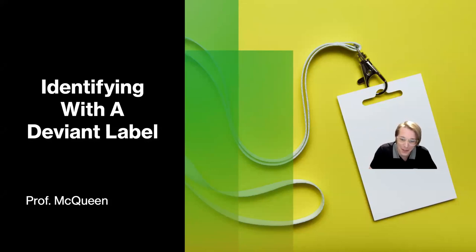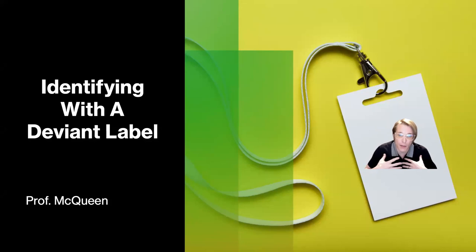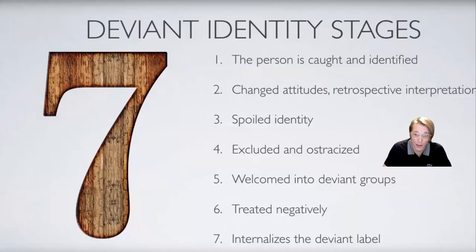Let us jump into this conversation and get going down this process. The reality is that many people break norms and therefore engage in deviance, but not everyone is labeled as deviant because of their behavior. Let's examine how a person develops a deviant identity once he, she, or they is labeled. We'll also look at the accounts they use to neutralize or normalize deviance.